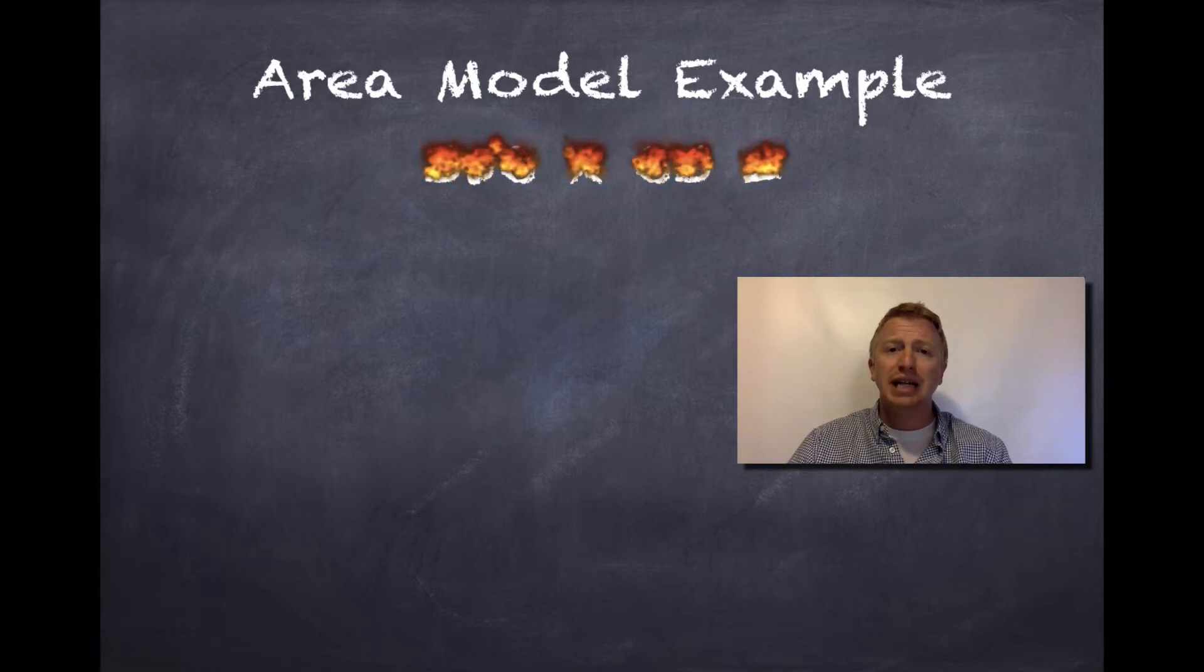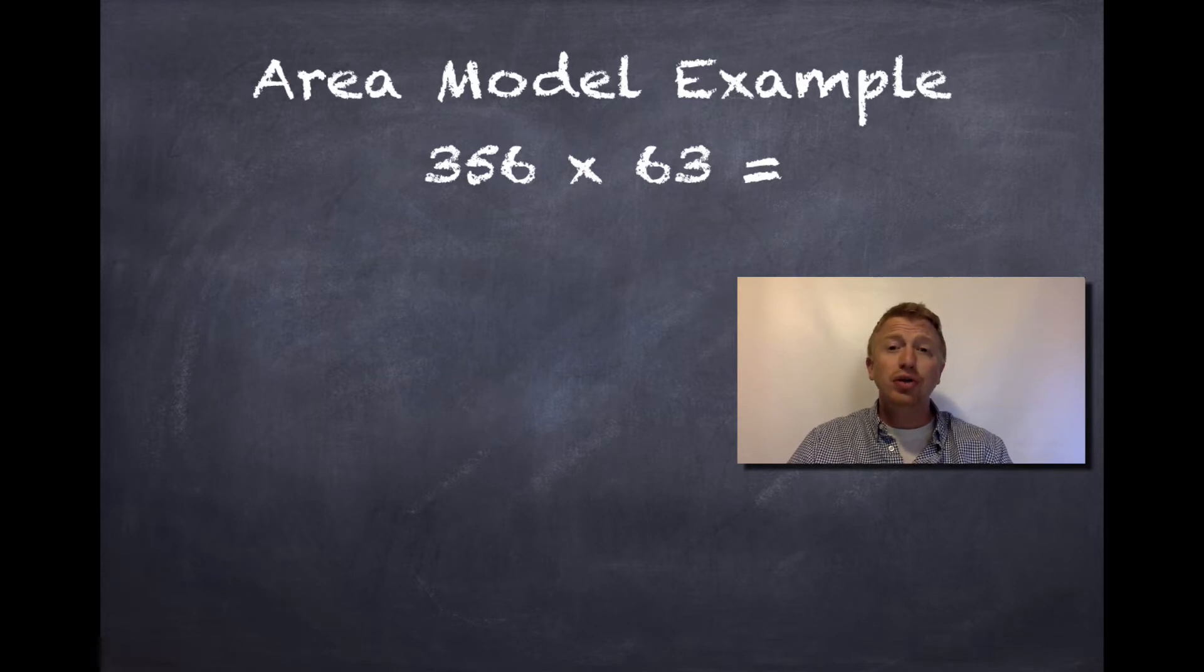The problem that we're going to be working on today is 356 times 63. Now, those two numbers in a multiplication problem are known as factors. They are the numbers that we multiply together. Let's start with our example.